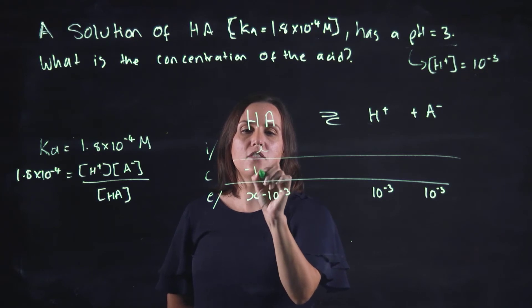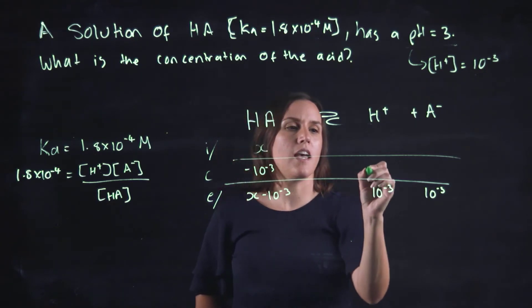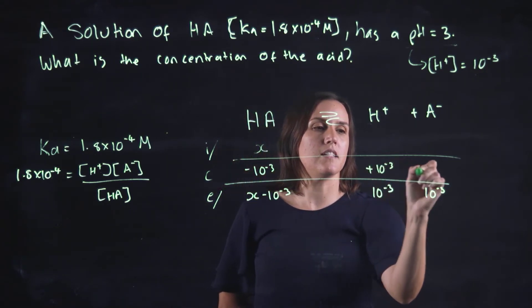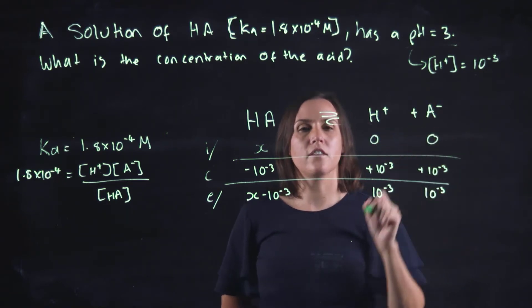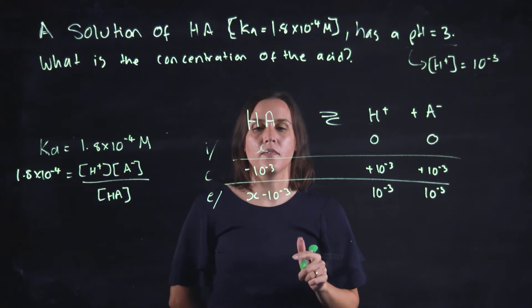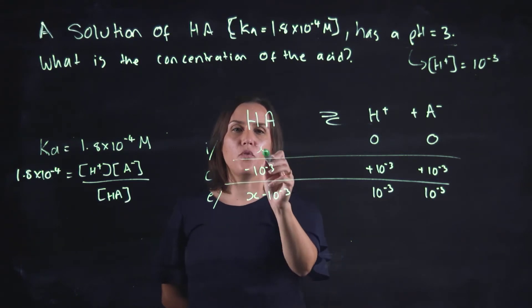And this will be X minus 10 to the minus 3. So the change will be losing and gaining that 10 to the minus 3. And initially, they're 0. So that's always 0 initially. So we're trying to solve for X.